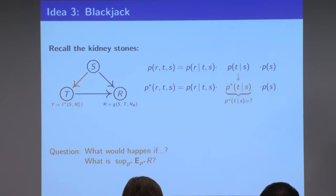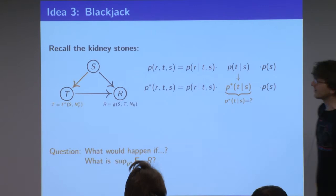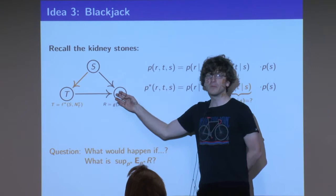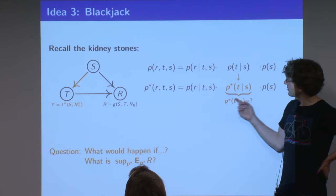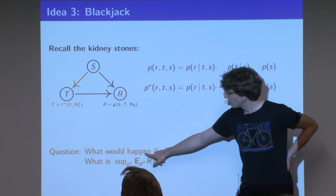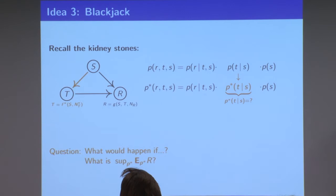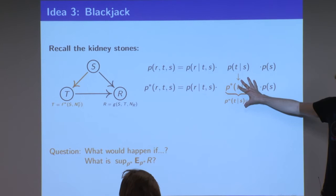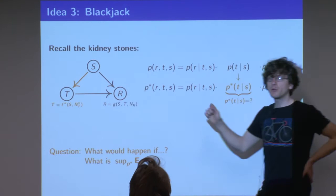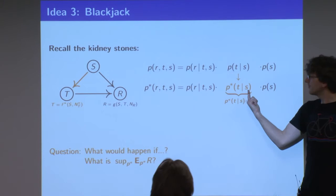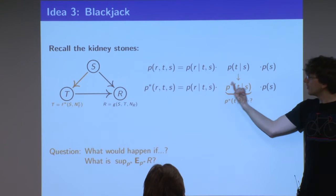We have to say what we mean by optimal. Let's say we have one variable of particular interest, say recovery. We want most people to recover. The question is: how shall we choose P* such that we get the best expected recovery? This connects to reinforcement learning — we have actions we can choose that may depend on the state. Maybe T is our action and S is the state. Depending on the state, we choose a different action. We are playing around with this factor in the Markov factorization.